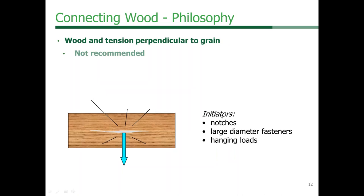One thing to consider is hanging loads perpendicular to grain. If a connection applies load downward in the lower portion of a beam, this is the Achilles heel of wood — it causes tension perpendicular to grain, which is not recommended. Initiators of tension perpendicular to grain include notches, large diameter fasteners, and hanging loads.